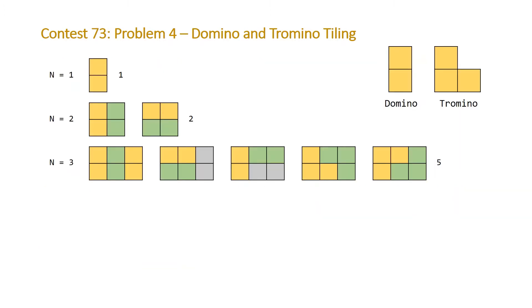We have our domino and tromino tiles in the top right-hand corner and we also have the solution to the first three n's: 1, 2, and 3. We can see here that clearly when n is 1 and we have a 2 by 1 board, we're only going to have one solution and that's just the domino tile.